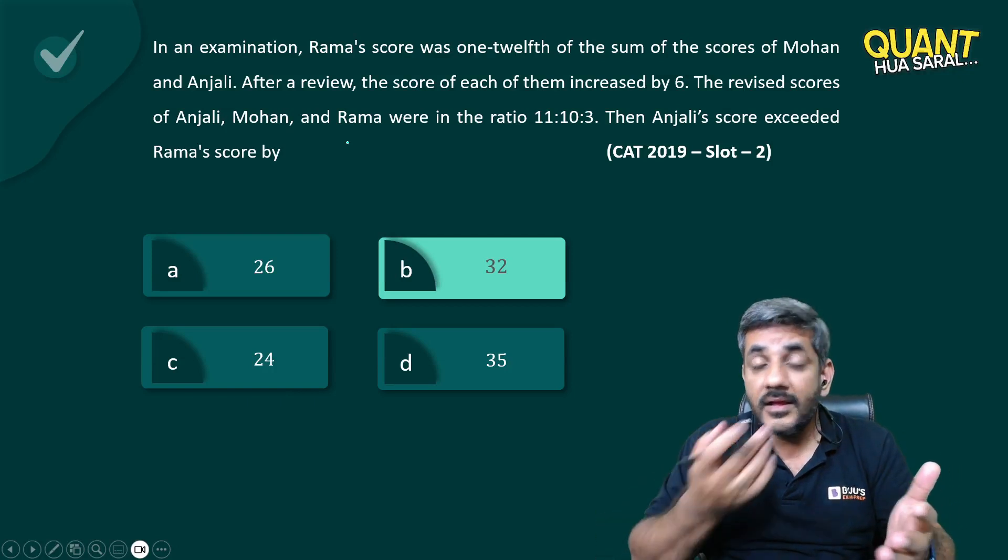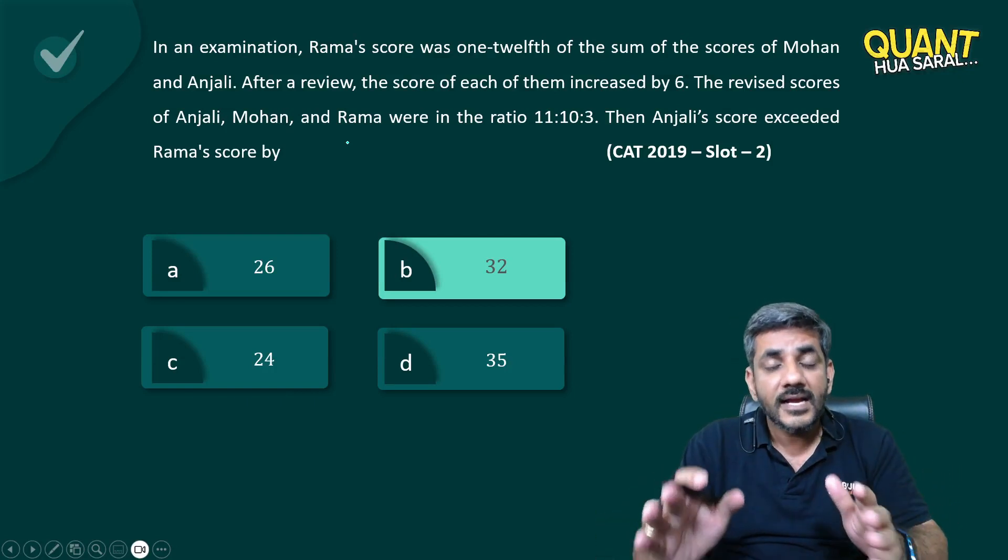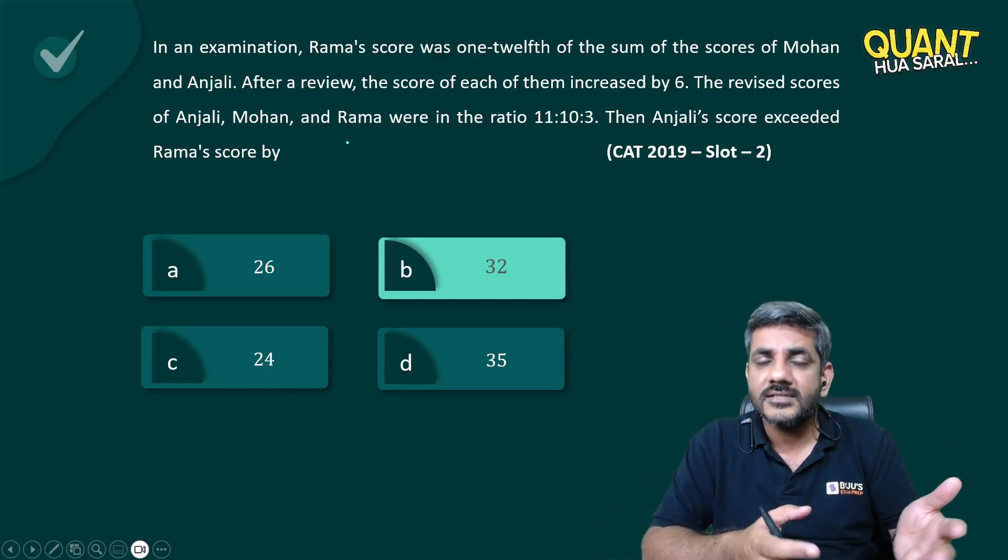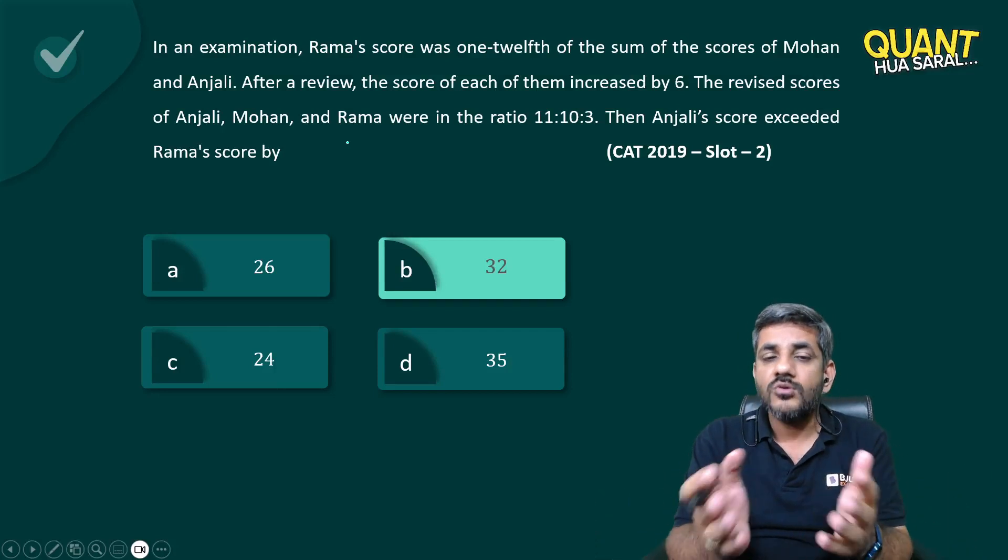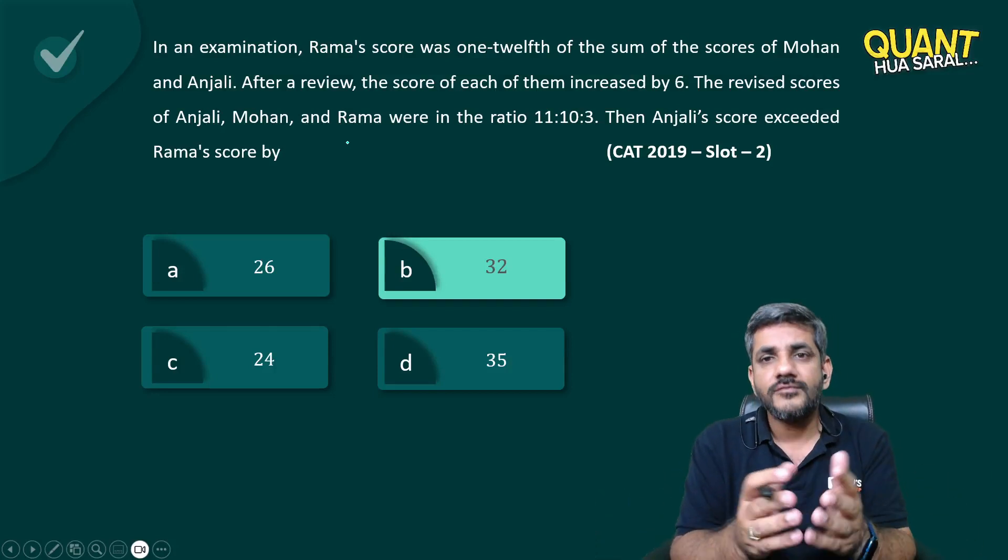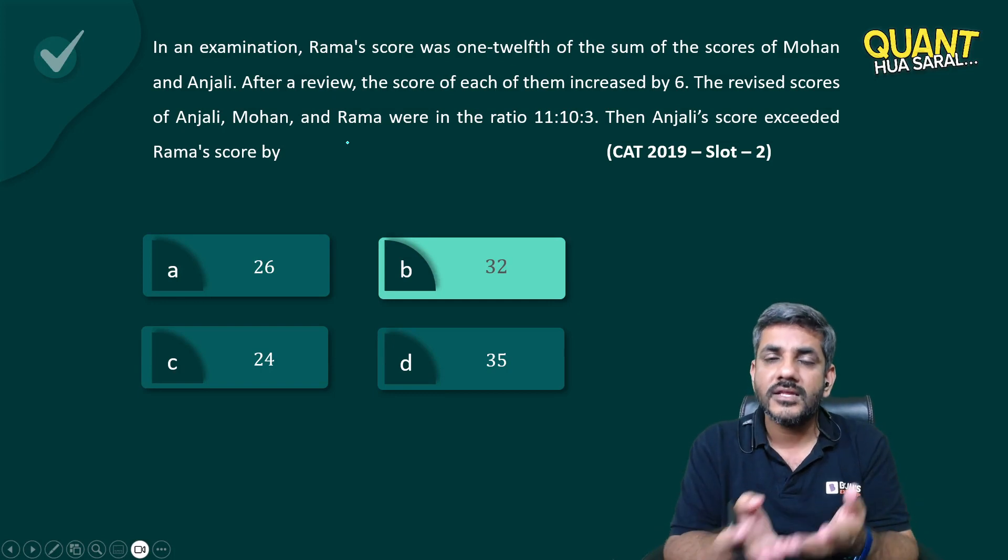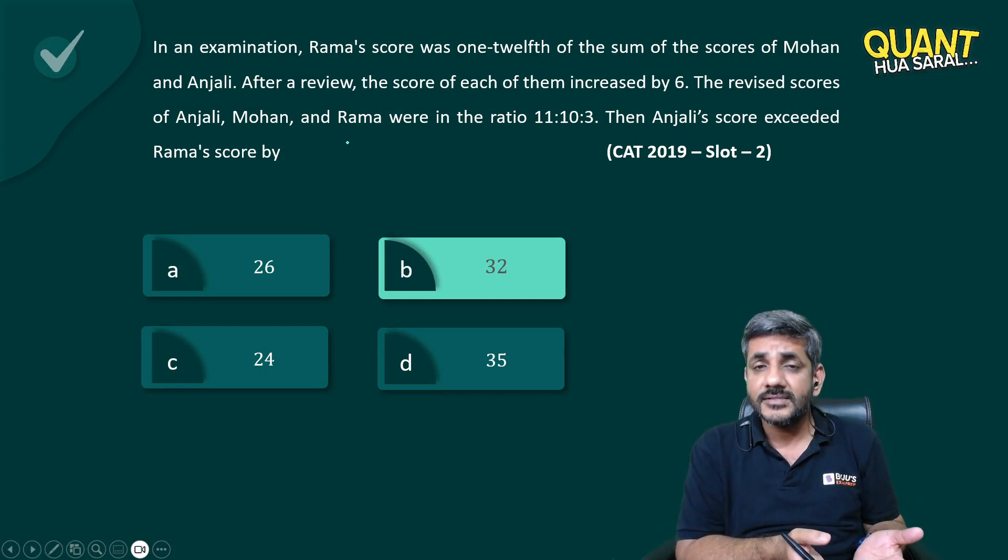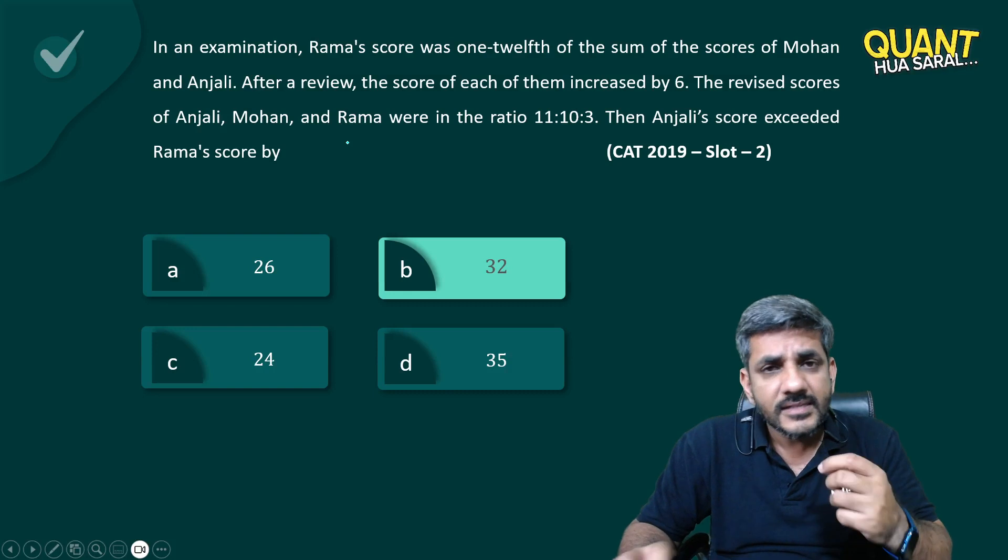Now there is a possibility 32 might not have satisfied. If 32 would not have satisfied, I would have straight away said 24 is the answer. There was no need to check. Out of the four options, two were already eliminated. Out of the remaining two scores, if 32 is not the answer, of course 24 is the correct answer.